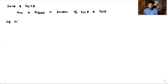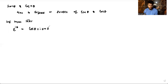We know that e^(iθ) is equal to cosθ + i·sinθ. Now we can raise the power on both sides by n, so the left hand side will become e^(inθ) and the right hand side will become (cosθ + i·sinθ)^n.